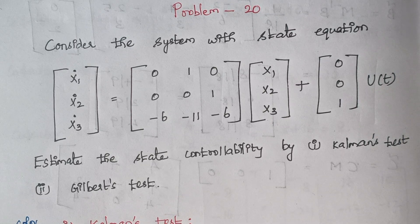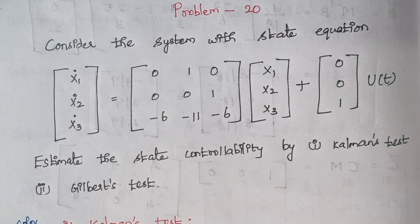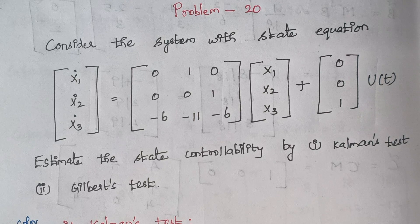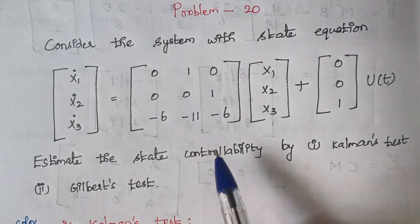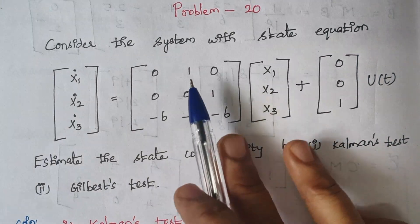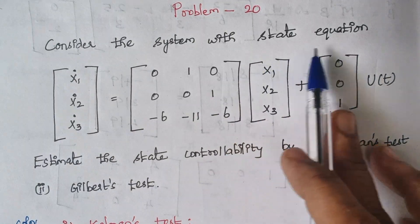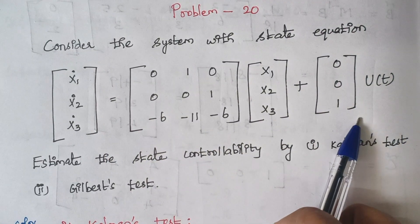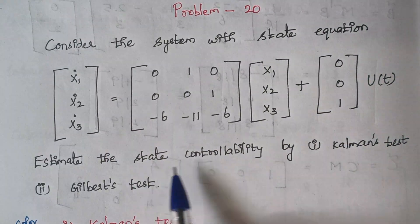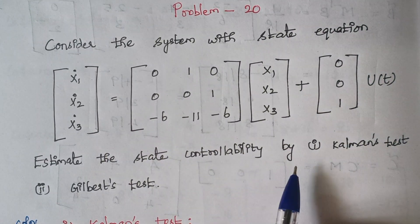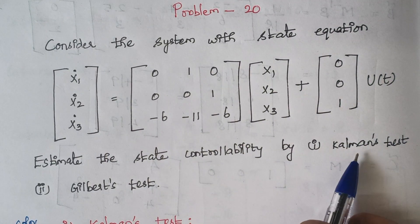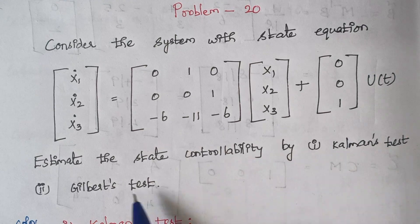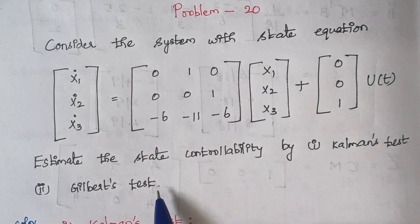Hello viewers, I am Kausalya. Today we are going to solve problem number 20. The problem is: consider the system with the given state equation. We need to estimate the state controllability by Kalman's test and Gilbert's test.